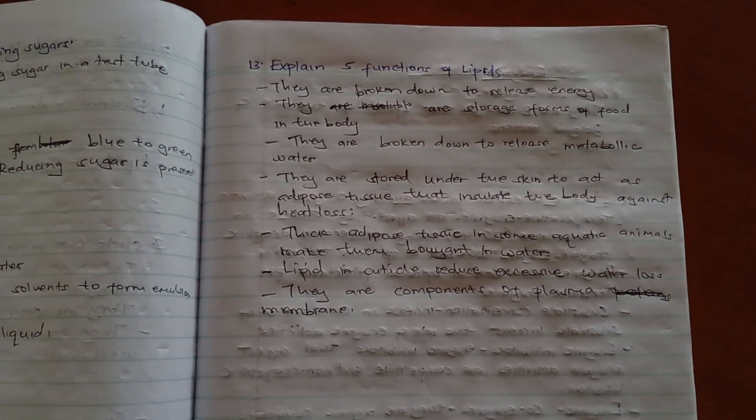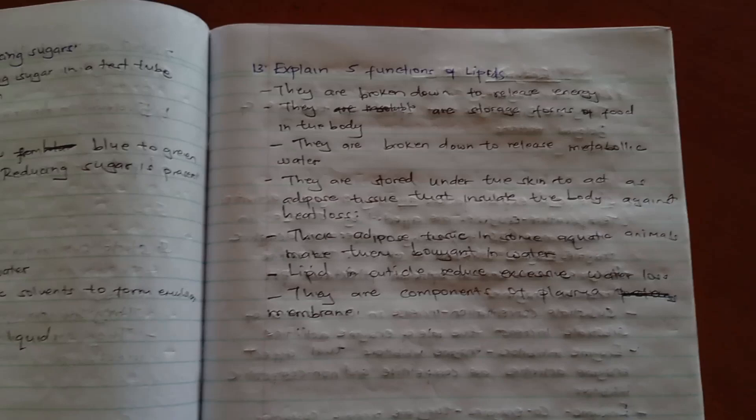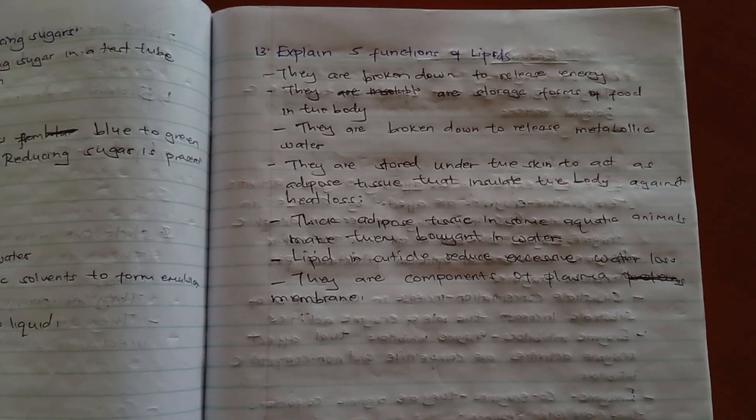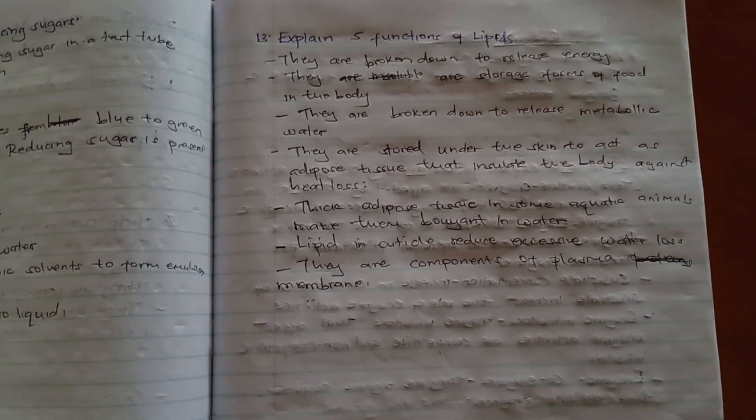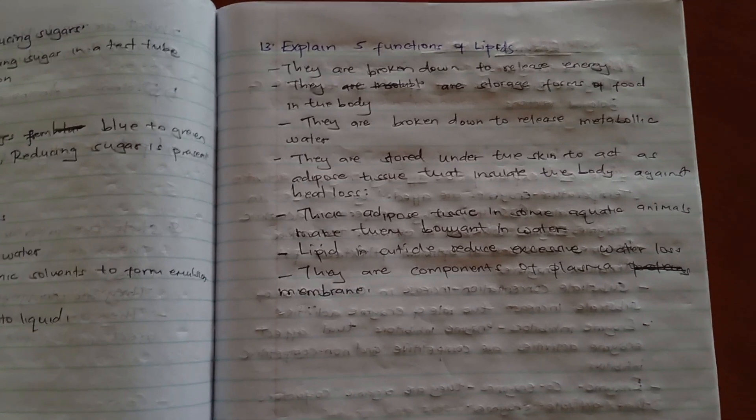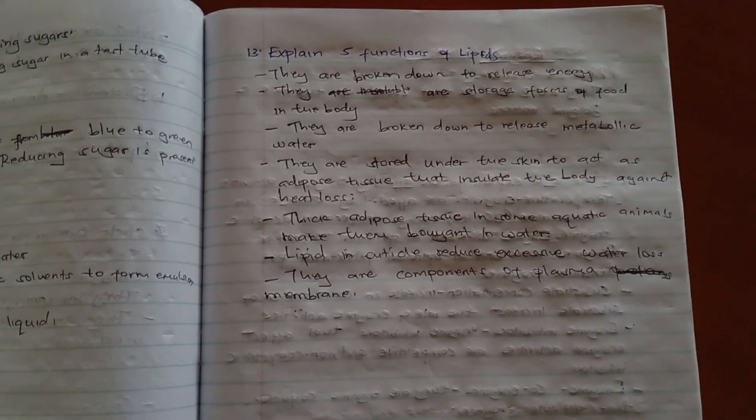Then they form the adipose tissue that makes the animals buoyant in water. That means that they can be able to float on water. Then they are components of plasma membrane.